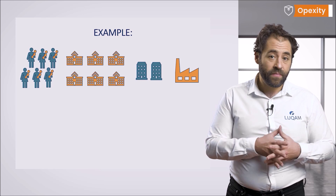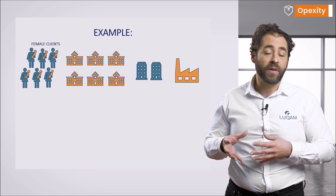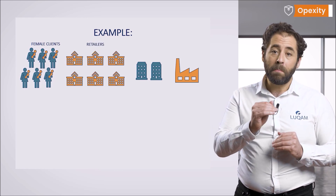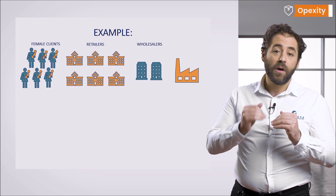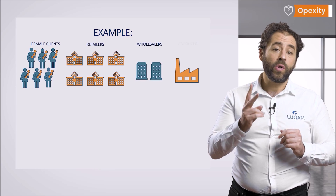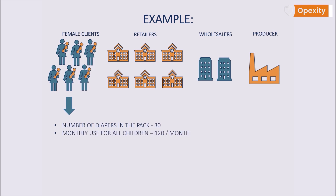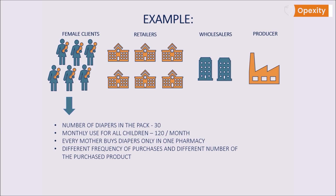Suppose that a company X producing baby diapers has a supply chain consisting of four links. Starting from the bottom of the supply chain, it consists of six female clients — mothers buying diapers for their children — six retailers, pharmacies from A to F, two wholesalers X and Y, and producer P. The producer sells diapers in packs of 30 pieces. We assume that all children use 120 diapers per month. The mothers buying in one pharmacy do not know the locations of other pharmacies and don't make any purchases there. The mothers' purchases considerably vary: some mothers buy one pack a week, others two packs every two weeks, yet there are those who buy four packs once a month, and some others buy the entire stock of eight parcels once every two months.